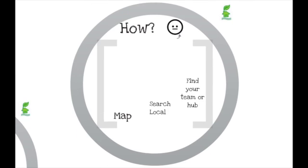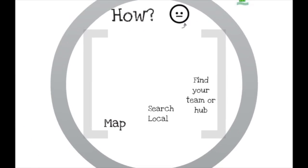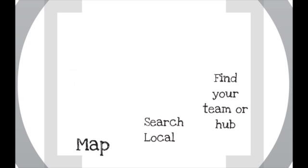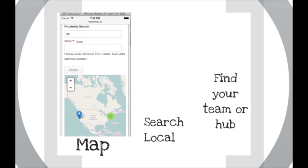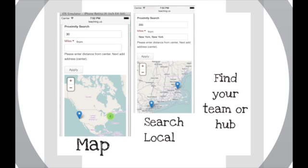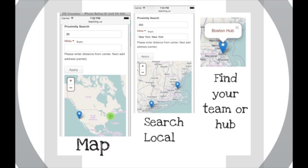So how are we going to make this happen? We'll start with something simple: a map. From that map, what we do is a local search, a little bit of proximity searching. And finally, what you're able to do is find your team or find your hub. You can also use these same tools to find other students.